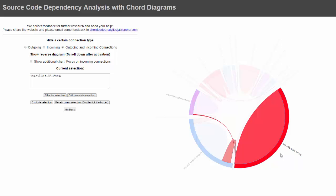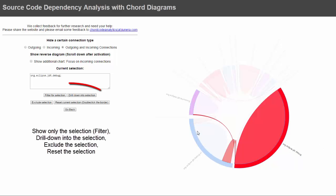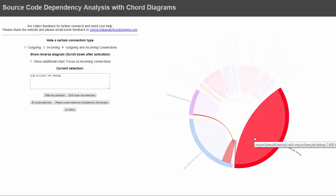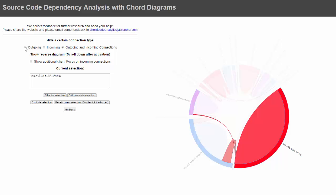Once you select a package, you see the current selection and get new controls where you can say you want only to see this package or you want to exclude this package from the selection. You have different options there.